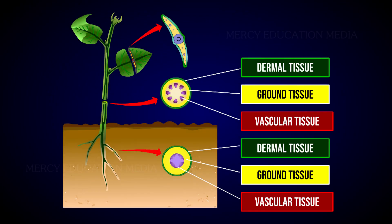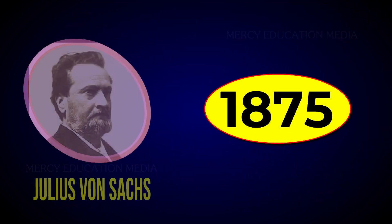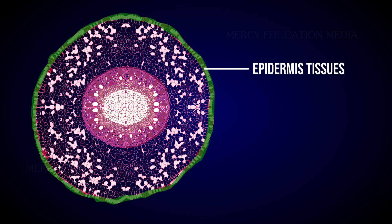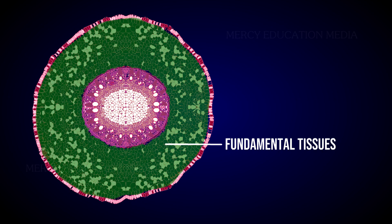A group of tissues performing a similar function irrespective of its position in the plant body is called a tissue system. In 1875, Sachs recognized three tissue systems in plants: the epidermal tissue system, vascular tissue system, and fundamental tissue system.